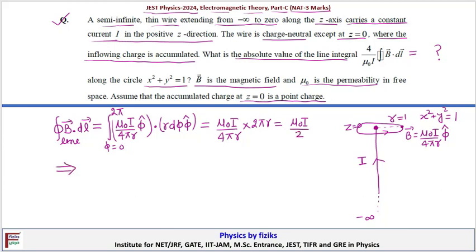Now from this equation we can write 2 over mu naught I times the closed integral B dot dl, this should be 1.